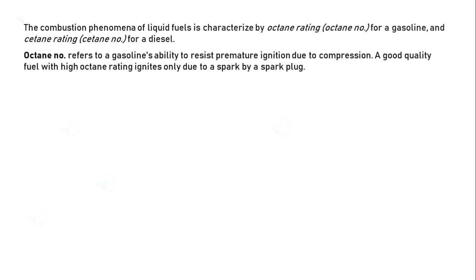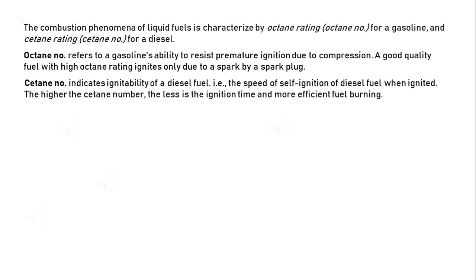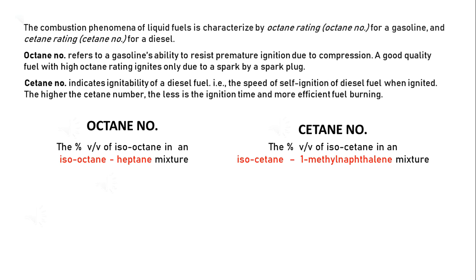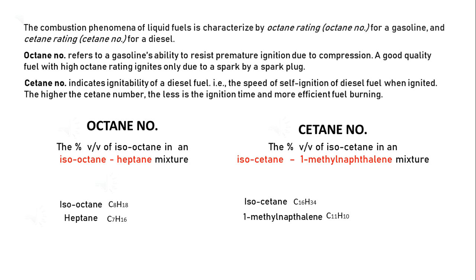Let's begin with the definition of octane and cetane numbers. When we say octane number, it is the percent by volume of iso-octane in a mixture of iso-octane and heptane. While cetane number is the percent by volume of iso-cetane in an iso-cetane and 1-methylnaphthalene mixture. Iso-octane has a molecular formula C8H18, and heptane is C7H16. Iso-cetane is C16H34 and 1-methylnaphthalene is C11H10.